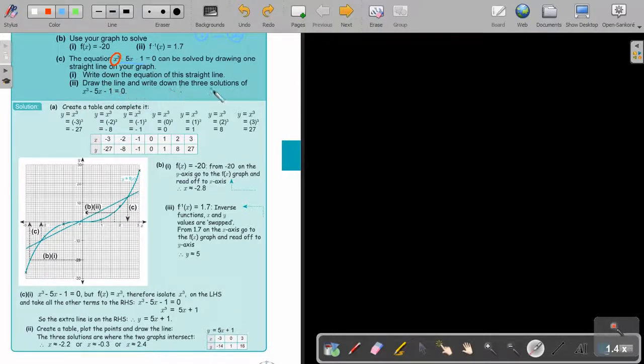And now, draw the line and the three solutions. The solutions will be where the two graphs intersect. So it's that point, which is negative 2.2, that point, which is negative 0.3, and this point, which is 2.4. And that will be your answer.